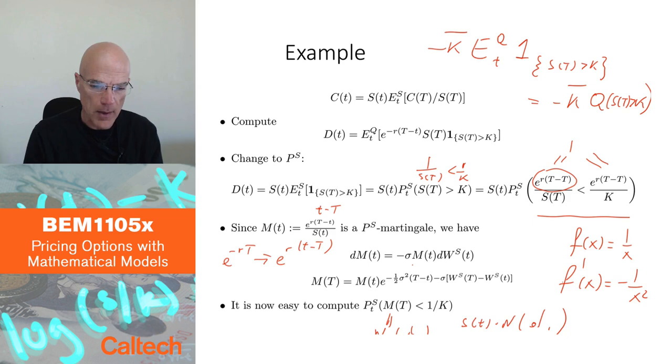This reduces to computing probabilities of a normally distributed random variable.